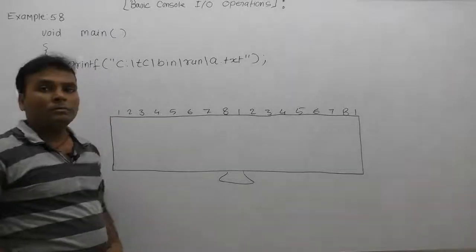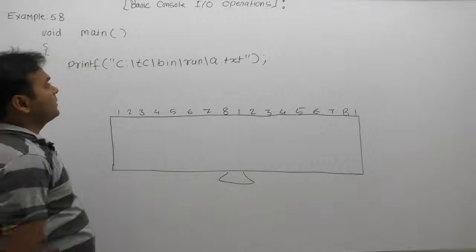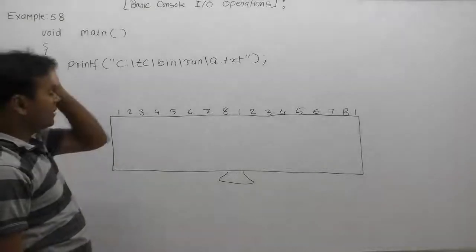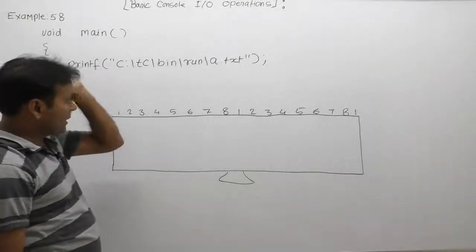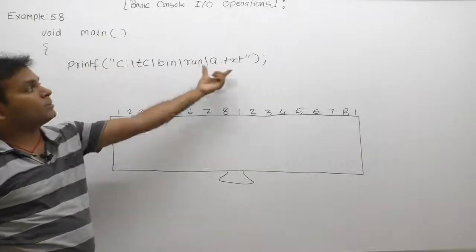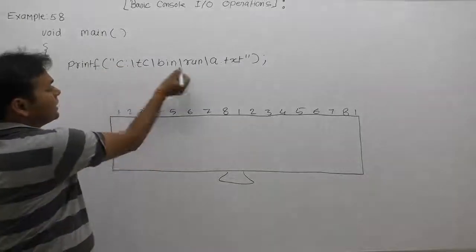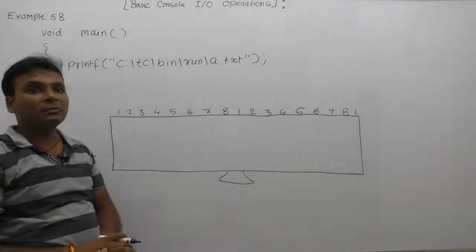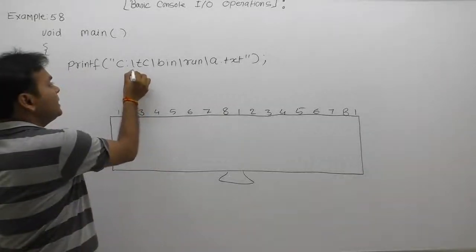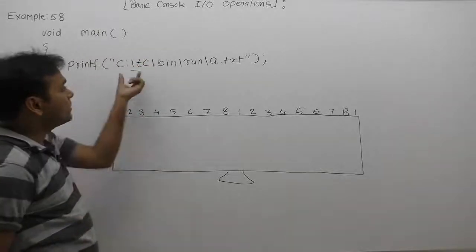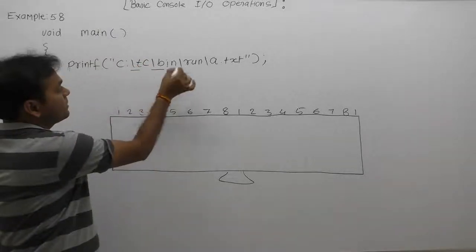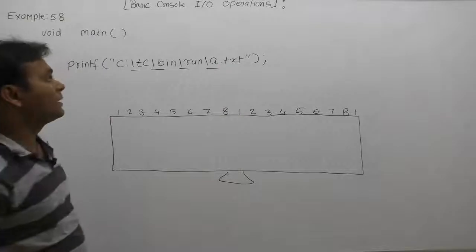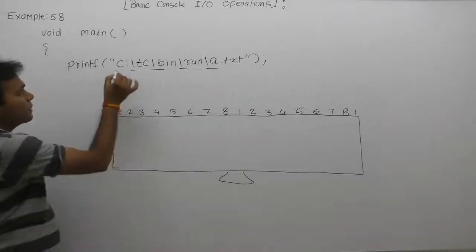What is the result of the current print statement? Here we are supplying some path of a file, a dot txt, in the form of a string. We are using print to display the currently given string message to print the location of the file. But concentrate on this case — as we know, every escape sequence character starts with a backslash symbol. Here backslash t is not representing any directory name; it will simply represent a tab space.